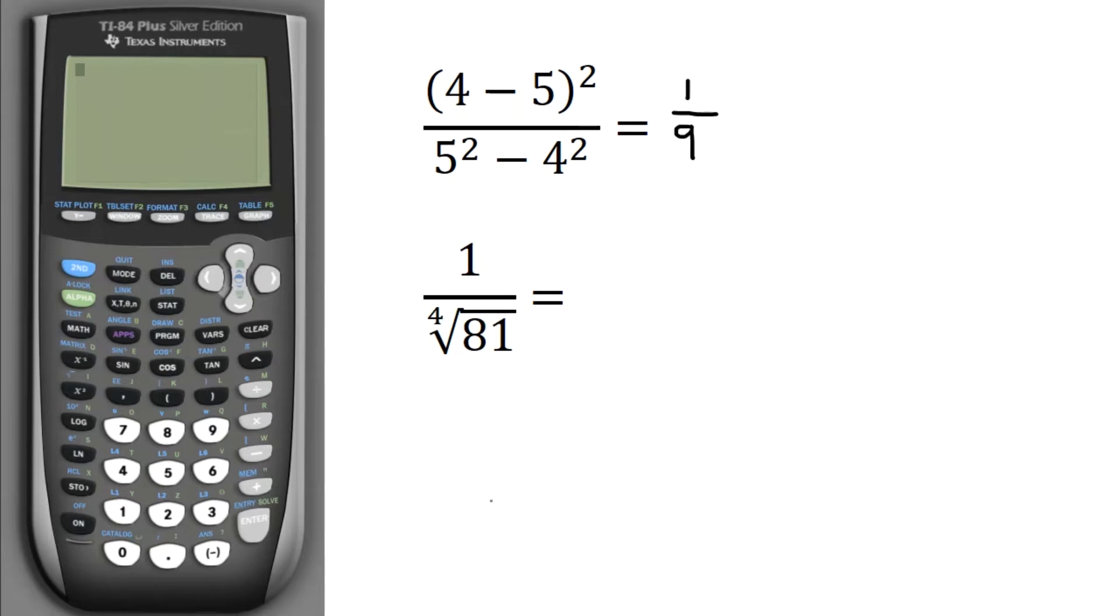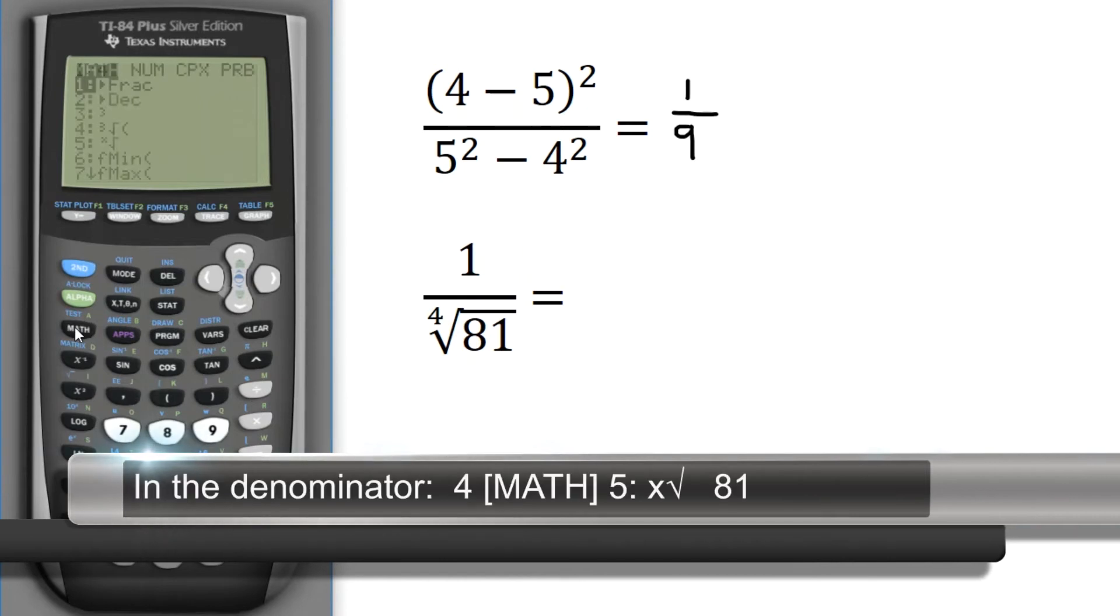Next, I want to calculate 1 divided by the 4th root of 81, so that's 1 divided by... I'm going to have to enter this 4th root of 81, so I'm going to hit 4, and then the math key, and I'm going to need this number 5 here.